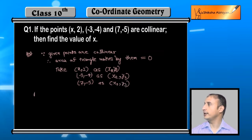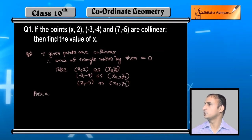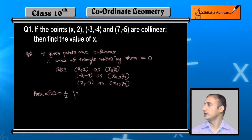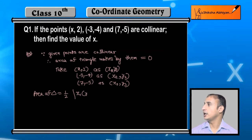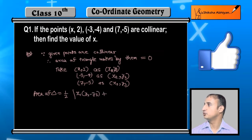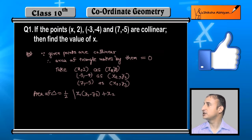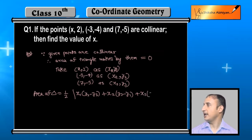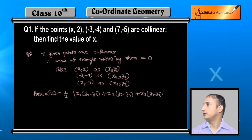So I am going to assume: 1st point x, 2nd point minus 3, minus 4, 3rd point 7, minus 5. Now area of triangle: half times x1 multiplied by y2 minus y3, plus x2 multiplied by y3 minus y1, plus x3 multiplied by y1 minus y2. This is our area of triangle formula.